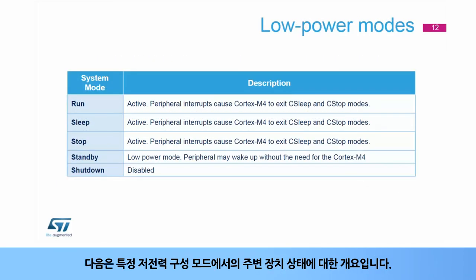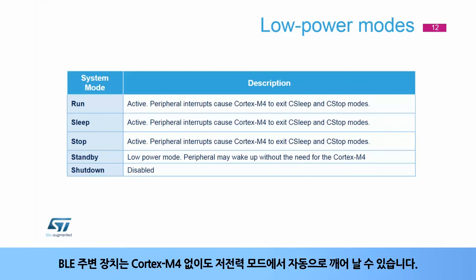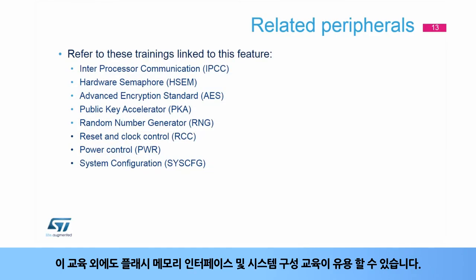Here is an overview of the peripheral status at specific low-power configuration modes. The BLE peripheral can operate in all low-power sleep, stop, and standby modes, except for shutdown mode. The BLE peripheral is capable of autonomously waking up from any low-power mode without the need for the Cortex-M4. When needed, the BLE peripheral interrupts and wakes up the Cortex-M4 from C-Run, C-Sleep, and C-Stop modes. In addition to this training, you may find the Flash Memory Interface and System Configuration Trainings useful.